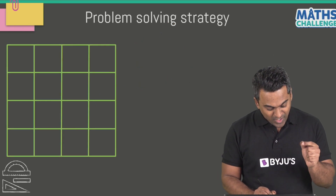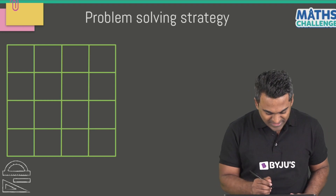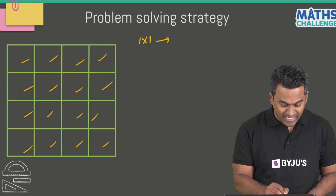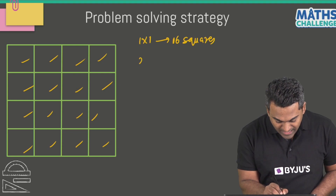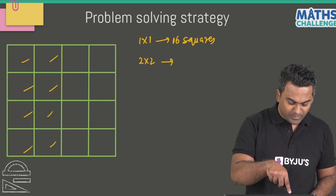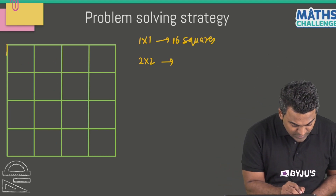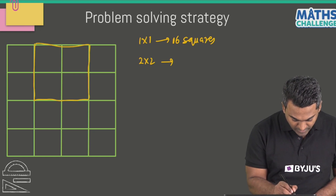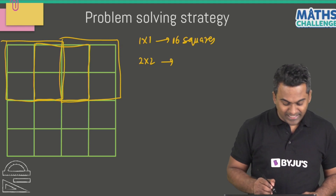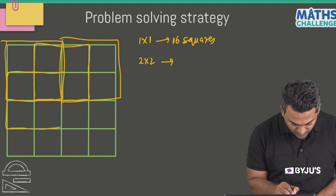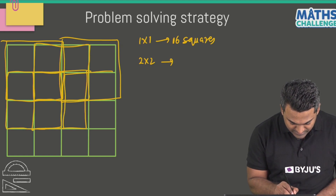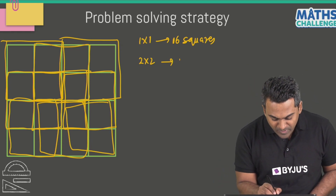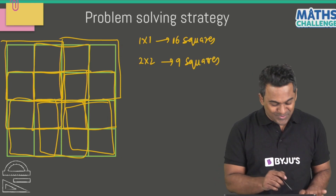Let's increase the number and observe a 4 by 4 square grid. How many 1 by 1 squares are there? Counting them: 1, 2, 3, 4, 5, 6, 7, 8, 9, 10, 11, 12, 13, 14, 15, 16 — so 16 such 1 by 1 squares. Now for 2 by 2 squares: the first, second, third — keeping those — fourth, fifth, sixth, seventh, eighth, and ninth. So there are nine 2 by 2 squares.